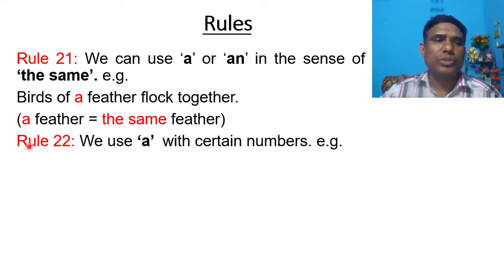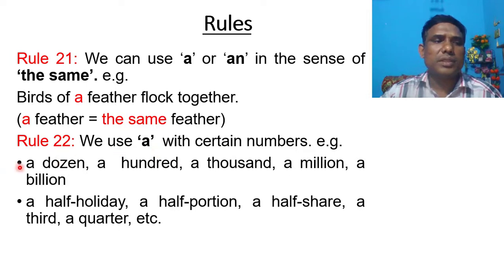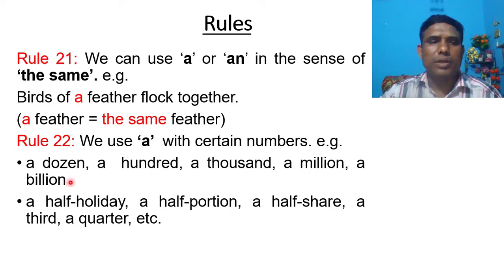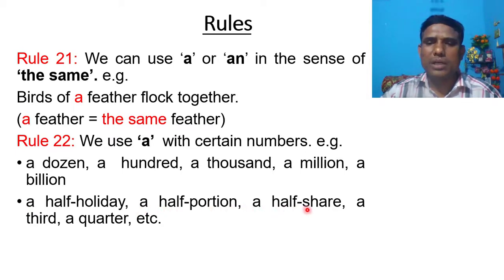Rule number 22: We use A with certain numbers. For example: a dozen, a hundred, a thousand, a million, a billion, a half holiday, a half portion, a half share, a third, a quarter, etc.